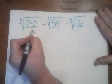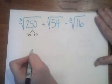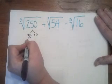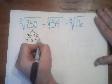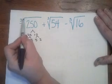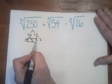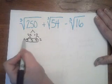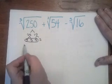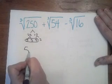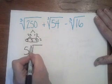So if I look at 250, well, that's 25 times 10, right? And 25 times 10 can be 25 breaks down to 5 times 5, and 10 breaks down to 5 times 2. And since I have a 3 up here this time, I need sets of 3 to get out of here. So I have three 5's right here. So that means I can pull 5 out. 5 gets out of the jail. But 2 stays in. So it's 5 cube root of 2.